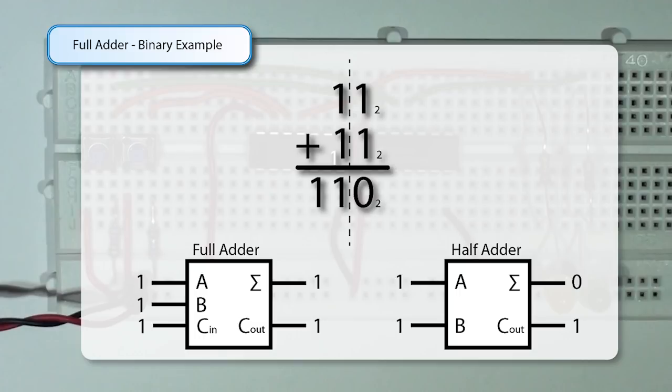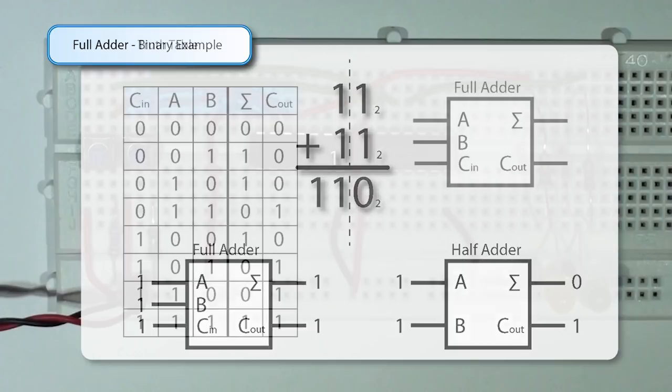Our solution to this problem is 1,1,0 — which is 0 ones, 1 two, and 1 four — giving an answer of 6, which is what we expect. Now we have to design a circuit that can deal with 3 inputs and give us 2 outputs. So here is our truth table, and because we have 3 inputs — A, B, and carry in — we have 2 to the power of 3, which is 8 possible combinations.